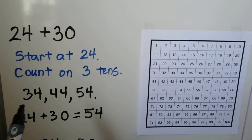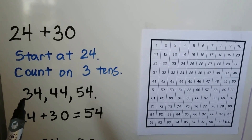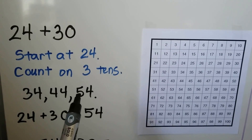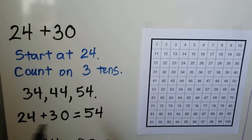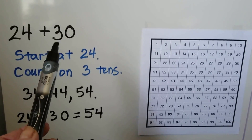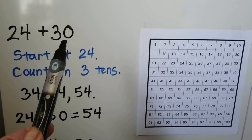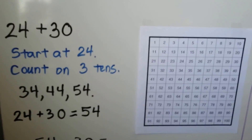The tens went up by 1 each time: 3 tens, 4 tens, 5 tens — when we added the 30, the 3 tens.